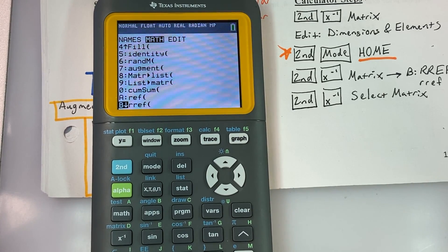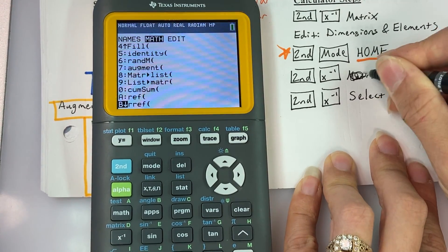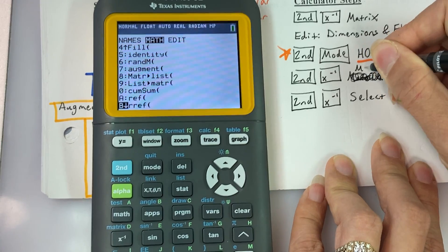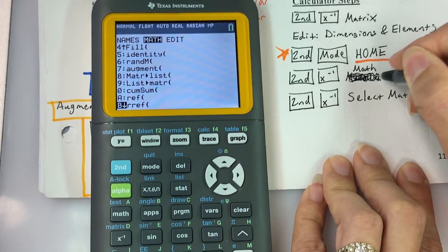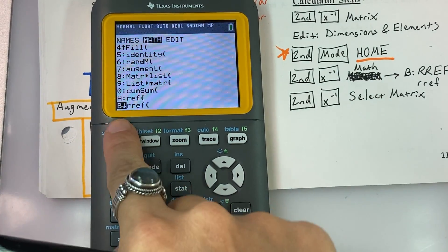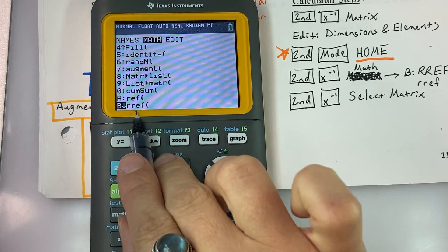And select down at the bottom option B, reduced row echelon form. So actually folks, that is a mistake there, not matrix. I should say math. So we want to go to the math tab. Sorry about that. And select option B down near the very bottom, that RREF.